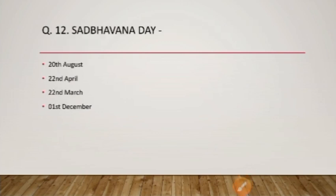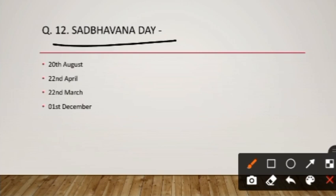Question number twelve: Sadbhavana Divas — when is Harmony Day celebrated? Sadbhavana Divas is celebrated on 20th August, because 20th August is the birthday of Rajiv Gandhi ji, and therefore Sadbhavana Divas is observed on that day.